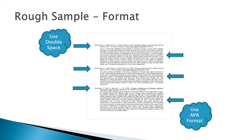This will not be terribly long — one paragraph for each article, so you can probably handle this in a couple of pages. It's designed to get you started on citations you'll likely use in your critical assignment. That critical assignment will require at least five journal articles, so here you're getting three done, and you'll just need to add two more when the critical assignment is due in two weeks.